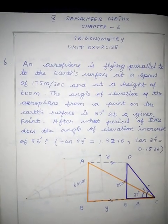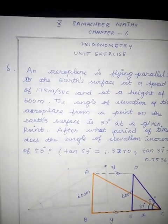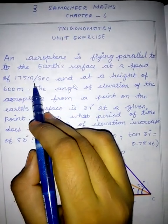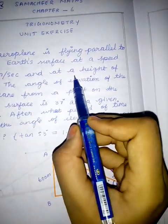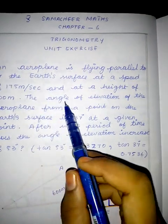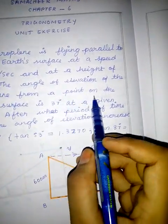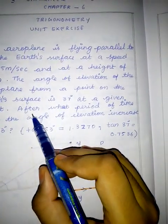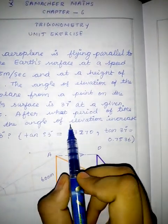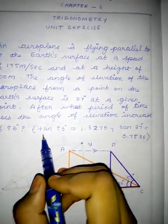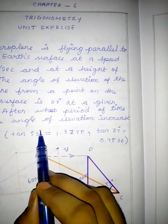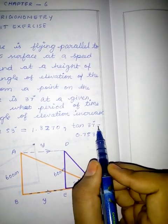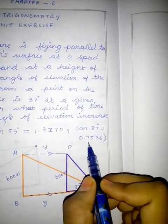An aeroplane is flying back to the earth's surface at a speed of 175 meters per second and at a height of 600 meters. The angle of elevation of the aeroplane from a point on the earth's surface is 37 degrees. After what period of time does the angle of elevation increase to 53 degrees? Tan 53 = 1.3270 and tan 37 = 0.7536.